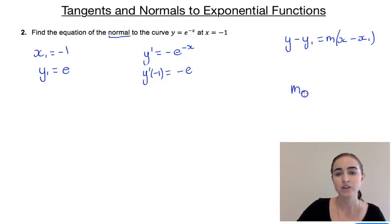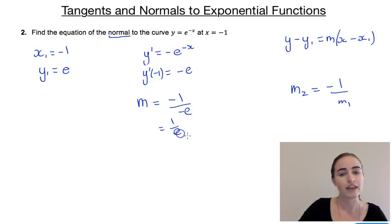So that means we know it has to satisfy this relationship here. So if two lines are perpendicular, then their gradients satisfy m2 equals minus 1 over m1. So that means the gradient that we're looking for would be minus 1 over minus e, or just 1 over e.